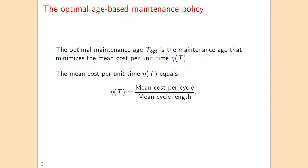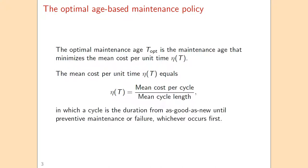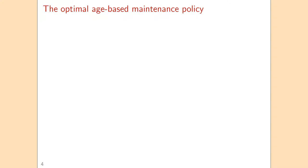The mean cost per unit of time equals the mean cost per cycle divided by the mean cycle length. The cycle is the time between two consecutive maintenance interventions — the time from when the unit is as good as new until the next maintenance action, which can be either preventive or corrective maintenance. So we need the mean cost per cycle and also the mean cycle length.